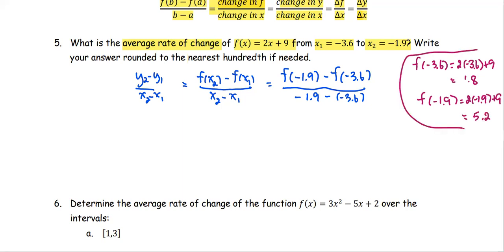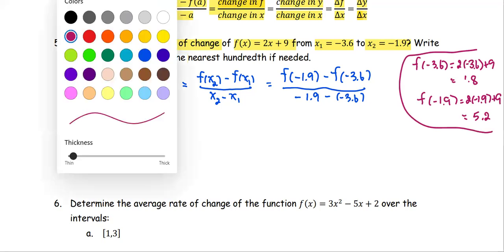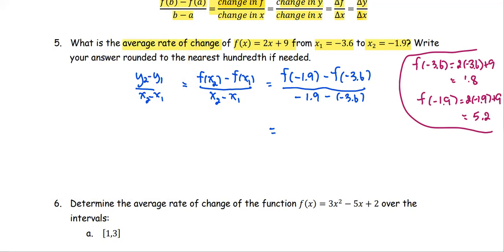Then we're going to replace the numbers. For the function at negative 1.9, the function value is 5.2, subtracted by the function at negative 3.6, which is 1.8, all divided by negative 1.9 plus 3.6. Next, we're going to simplify the numbers.